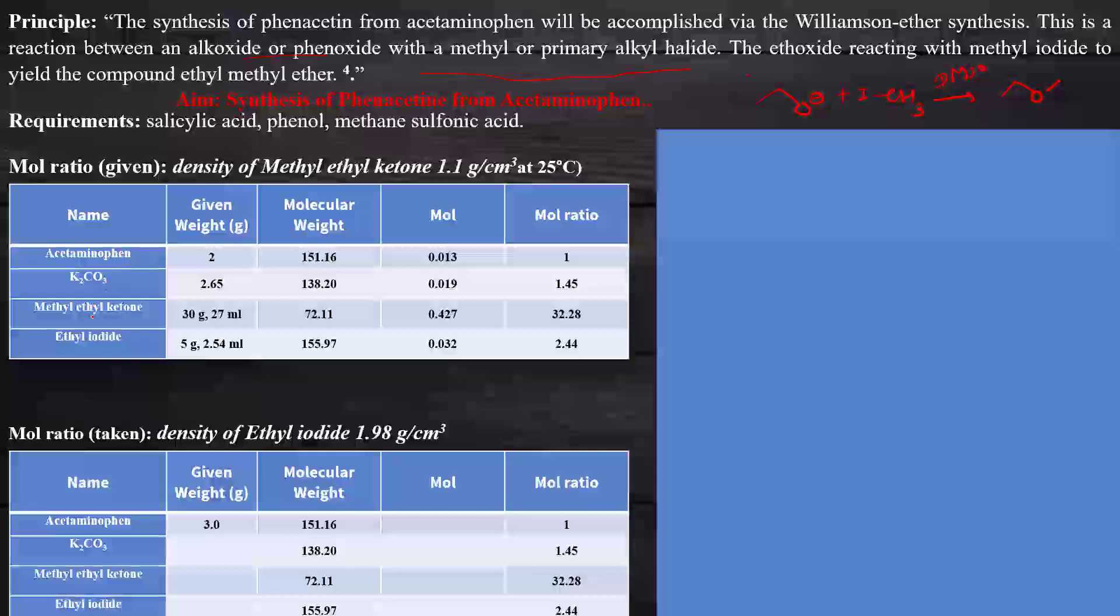The requirements for this synthesis are acetaminophen, K2CO3, methyl ethyl ketone, and ethyl iodide. For the mole ratio, all mole ratios are given for you. Now we will take the mole ratio, Q, R, and S. First, we will calculate Q. But before that, we will take the moles of acetaminophen.